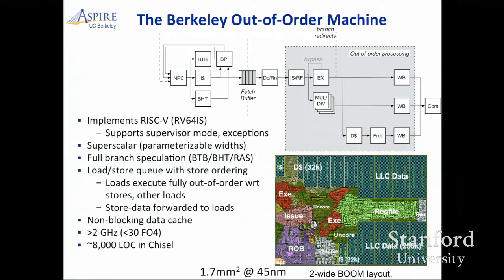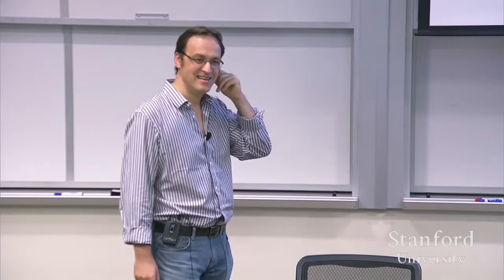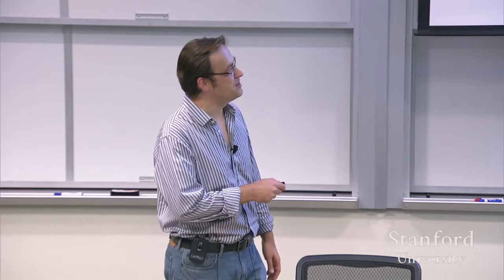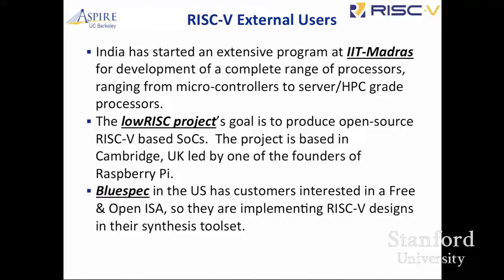We're not just doing in-order cores. There's a student working on out-of-order cores — we call it BOOM, Berkeley Out-of-Order Machine. It's a parameterized out-of-order machine where you can change issue width and functional units attached. It's been laid out and is running at a couple of gigahertz. At some point this will be open source once we get more bugs out — it currently runs most of the spec but there are still some bugs to work through. It's actually hard to design an out-of-order core that performs better than an in-order core; you have to get a lot of things right to have it really fly.